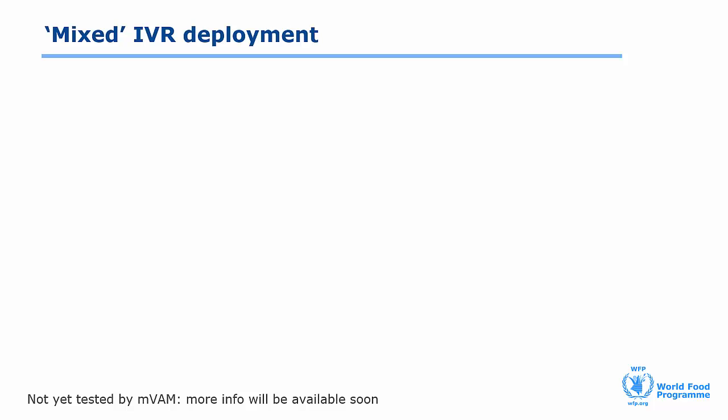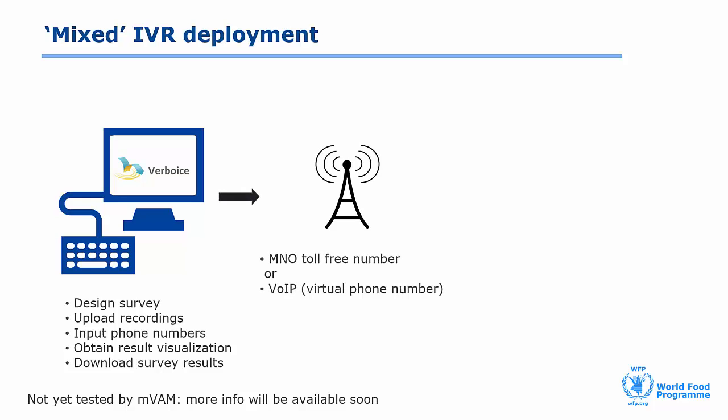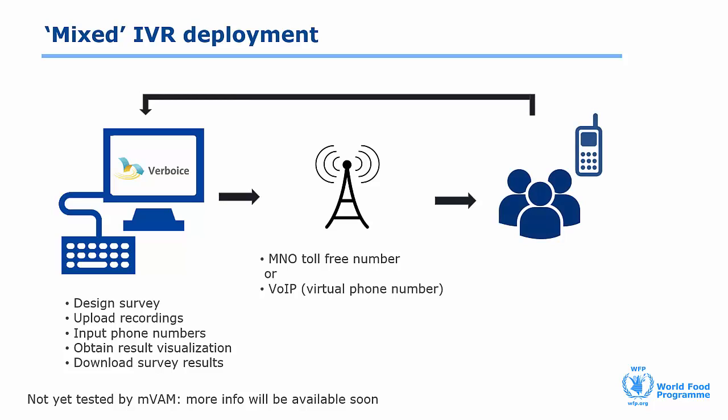This is a visualisation of how the mixed system would work. Your web interface is still Verboice; however, instead of being connected to the 2N VoiceBlue gateway as in in-house deployments, Verboice is directly connected to MNO gateways, using either a toll-free number bought from the MNOs themselves or through a virtual phone number. In this case, Verboice doesn't need to be installed on a local server — instead, it can be hosted on the cloud or at verboice.instedd.org. The data is recorded and ready to download in real-time from Verboice.